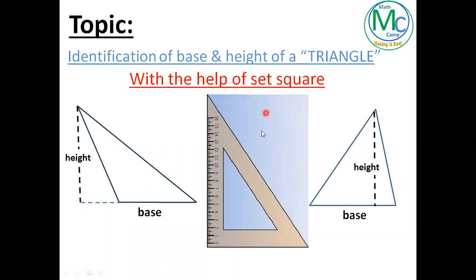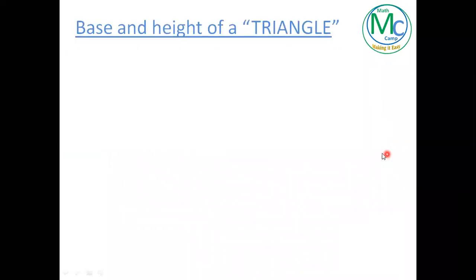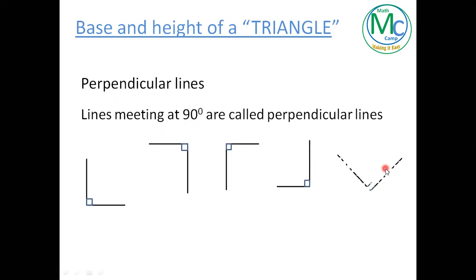Set square is basically a tool that you will always see in your geometry box. In the identification of base and height, the first thing you have to identify is perpendicular lines of that triangle. Perpendicular lines are those lines that are meeting each other at a 90 degree angle. Here are a few examples of perpendicular lines — all these lines are meeting each other at 90 degree angle. As we know that a triangle has three sides, so I'm going to convert all these perpendicular lines into triangles by adding one more side.